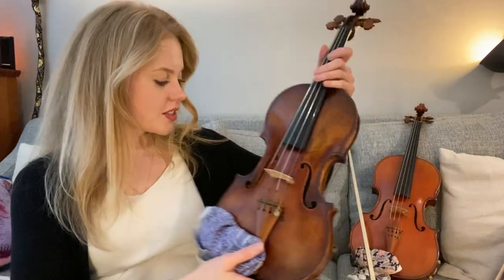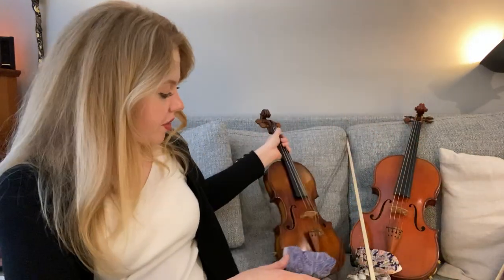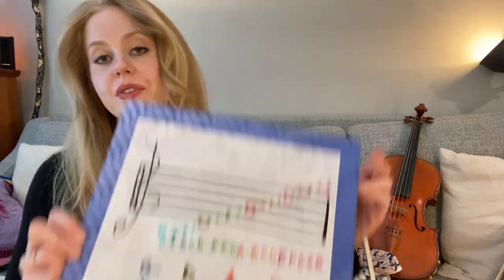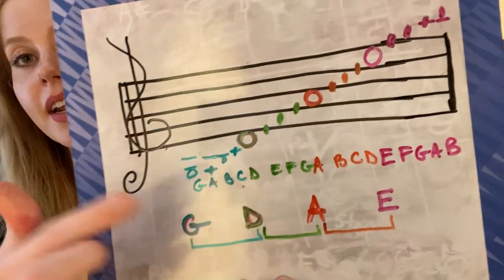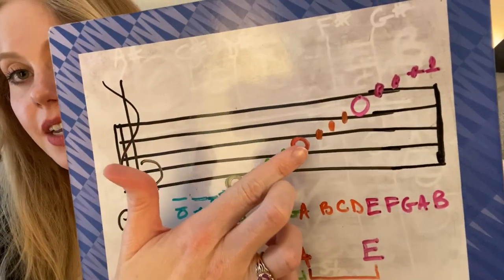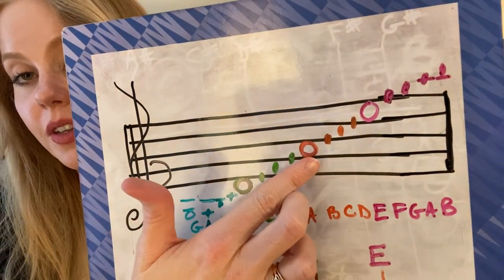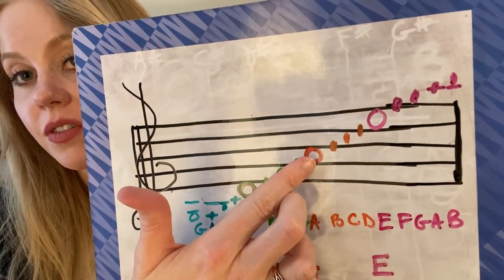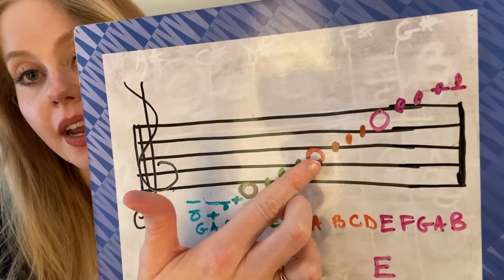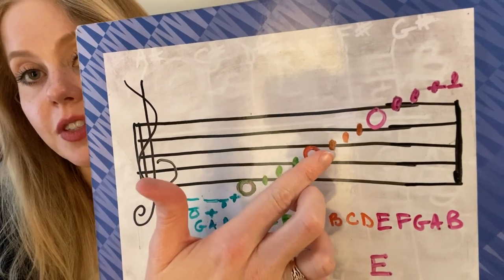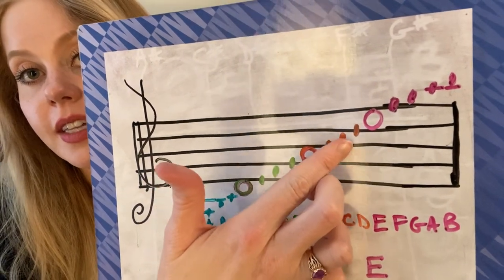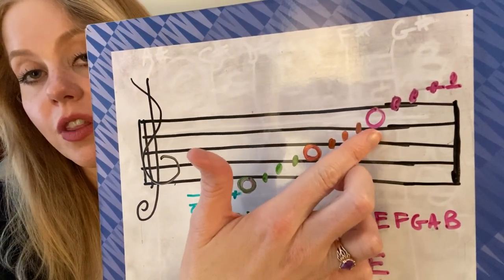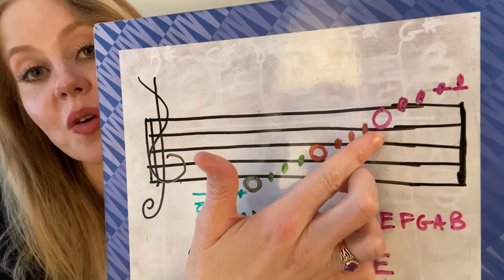I hope that kind of makes sense — that's just a little intro. You can continue onwards up the strings. Here's the A string — this would be your open A or fourth finger on the D string. So if it's open A, this would be first finger, second finger, third finger, fourth finger — it could be my open E.